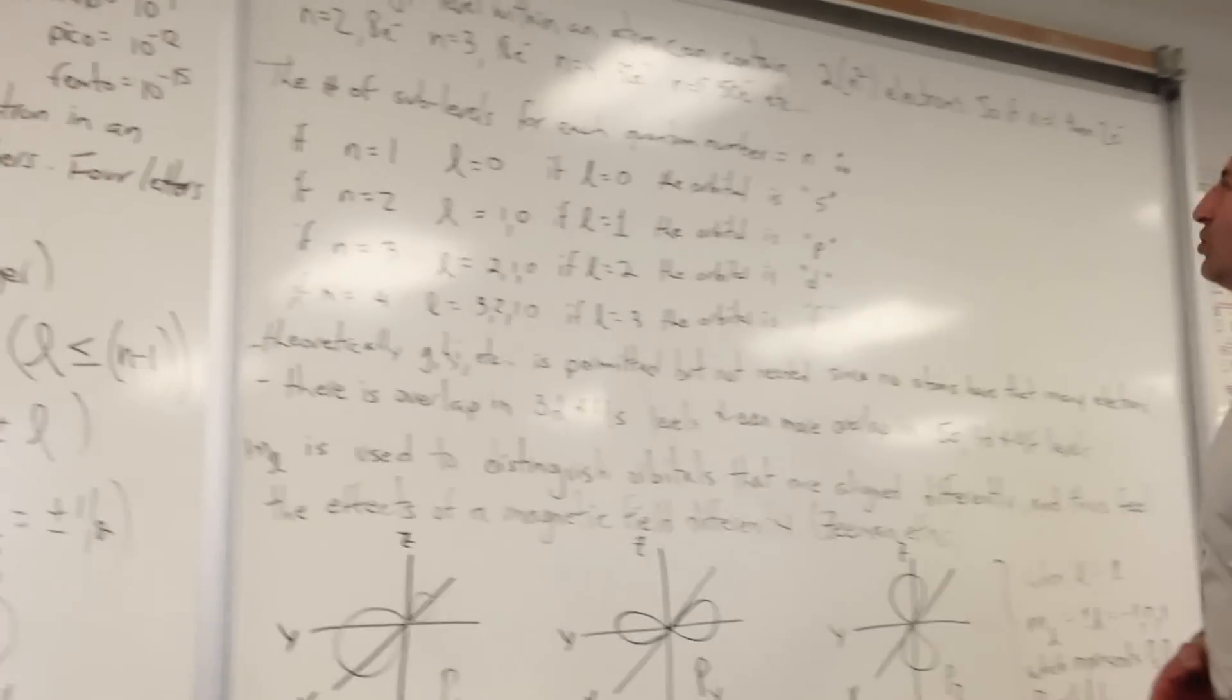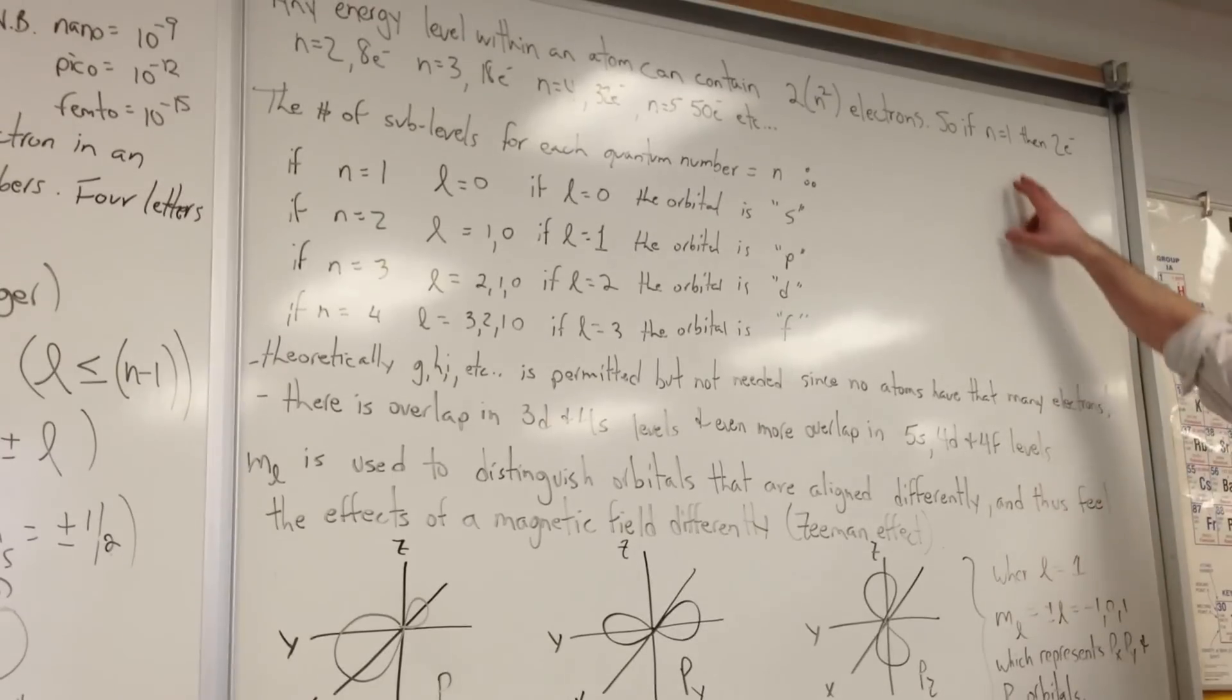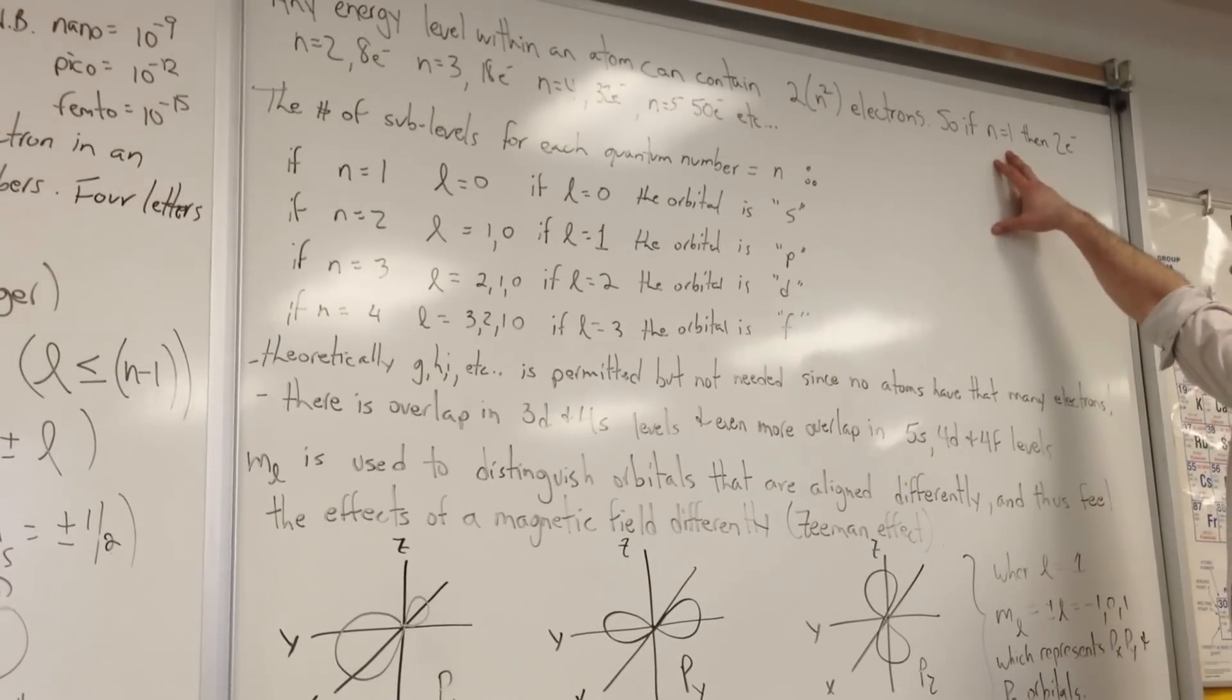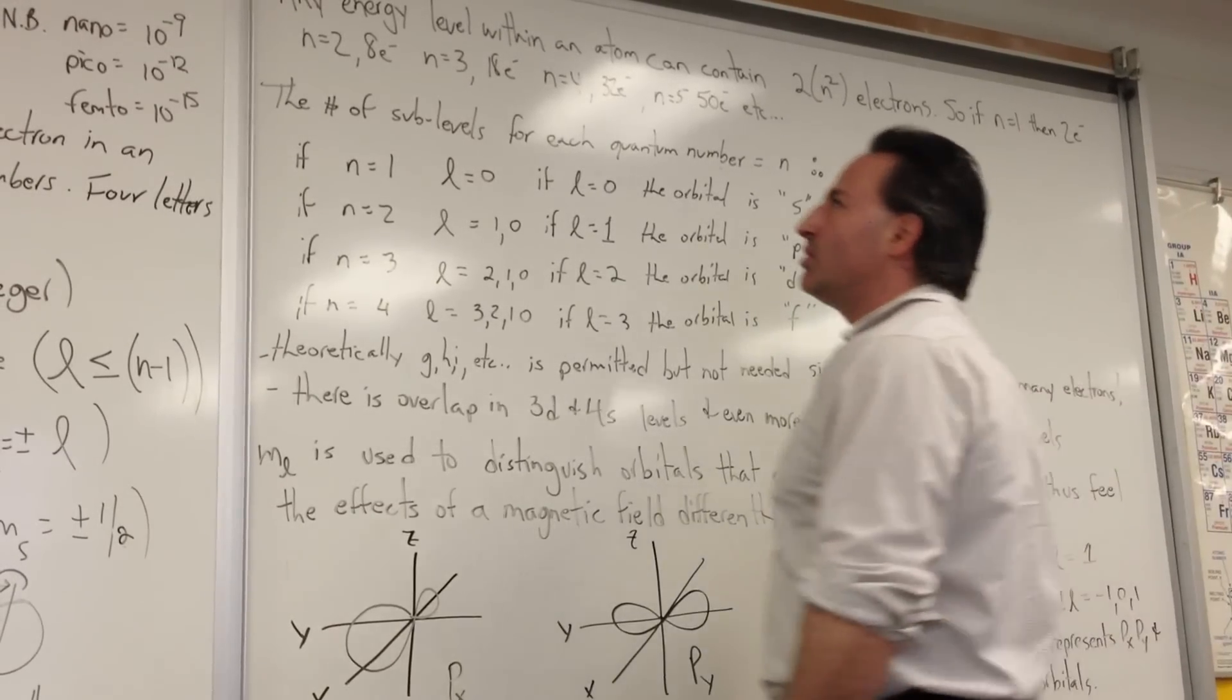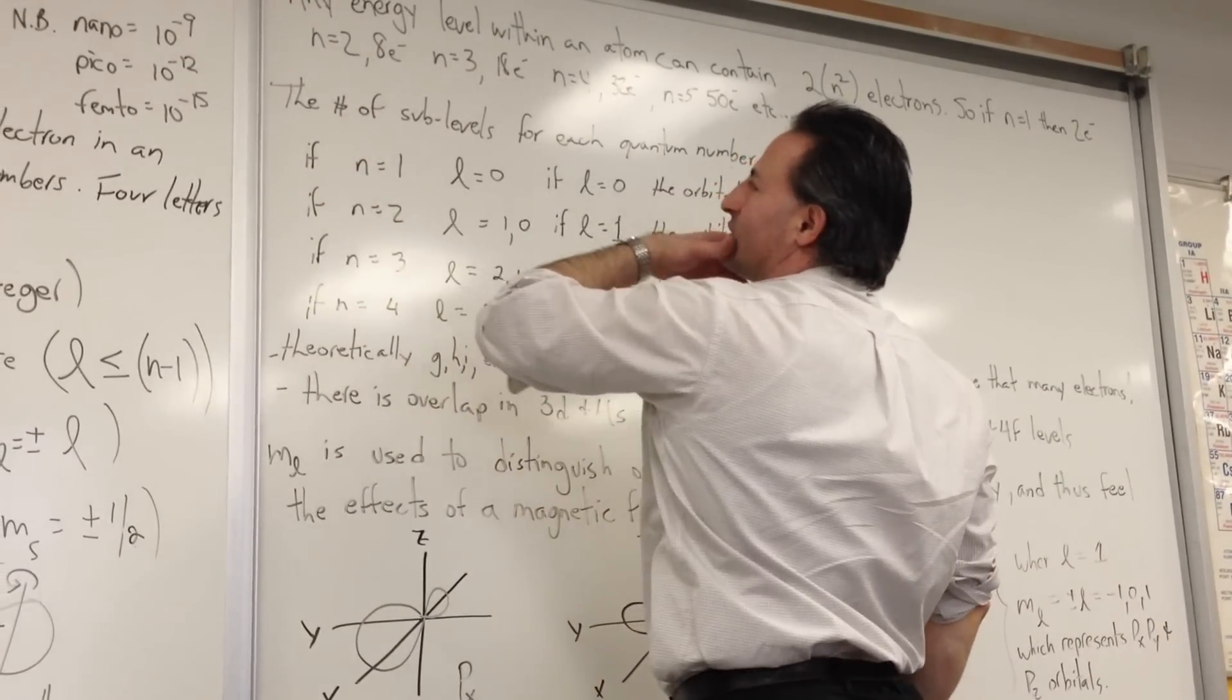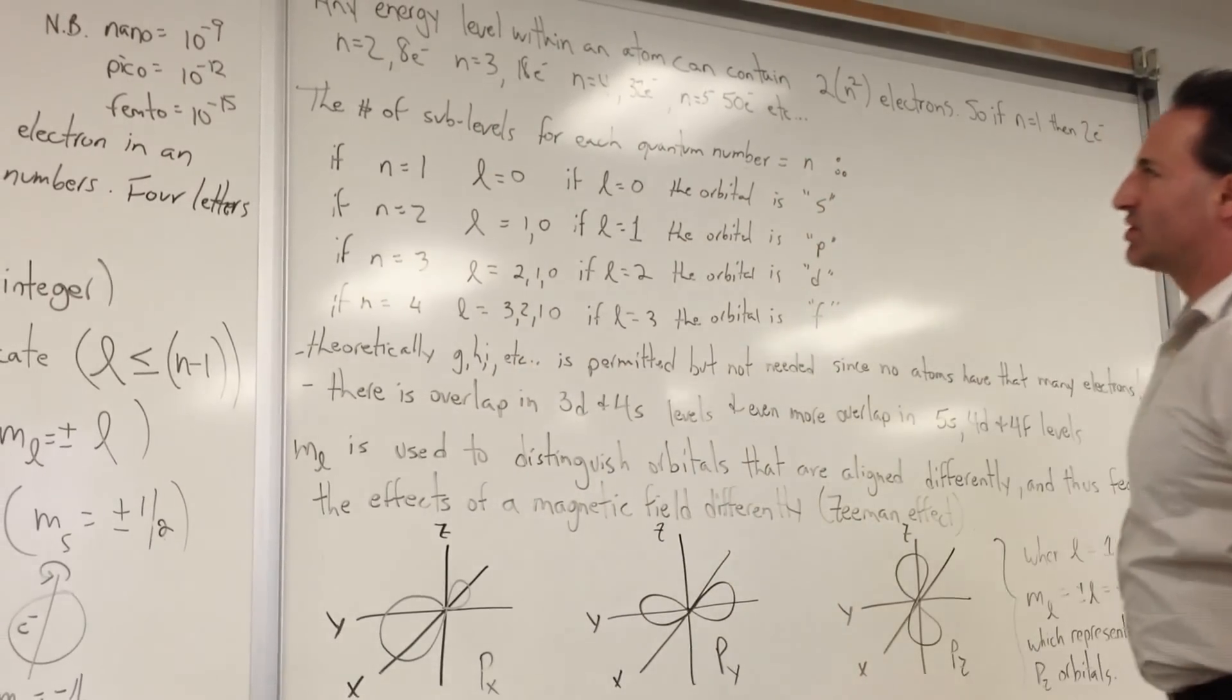Now, any energy level within an atom can contain 2 to the n-square electrons. So if the principal quantum number equals 1, then that level can contain two electrons. If the principal quantum number is 2, you can put up to eight electrons into the level. If the principal quantum number is 3, you can get up to 18 electrons and so on.